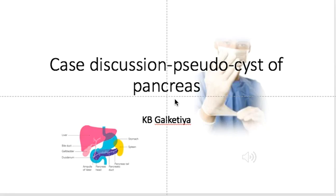Welcome to this discussion on pseudocyst of the pancreas. Most of the time a pseudocyst will form after an acute pancreatitis. Now in a patient even with chronic pancreatitis, they can on and off have acute exacerbations, and in these cases a pseudocyst is also possible.